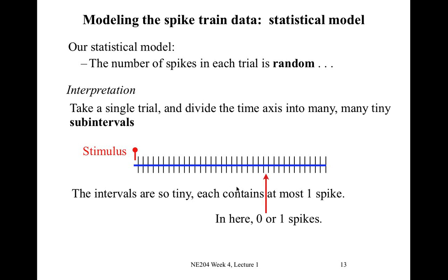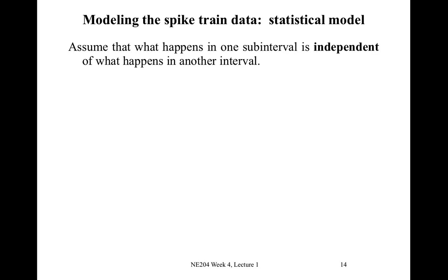If we look within a single sub-interval — for example, the one indicated by the red arrow — there is either zero or one spike in that sub-interval; we never see two spikes in a sub-interval. We define little m as the number of sub-intervals. An important assumption of our model is that what happens in any sub-interval is independent of what happens in any other sub-interval.